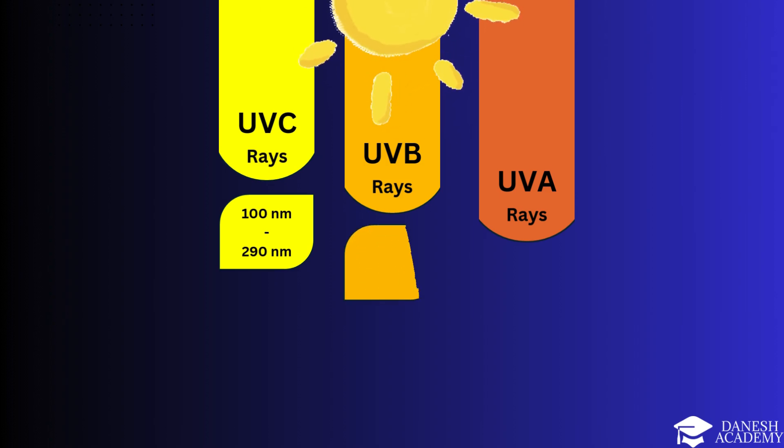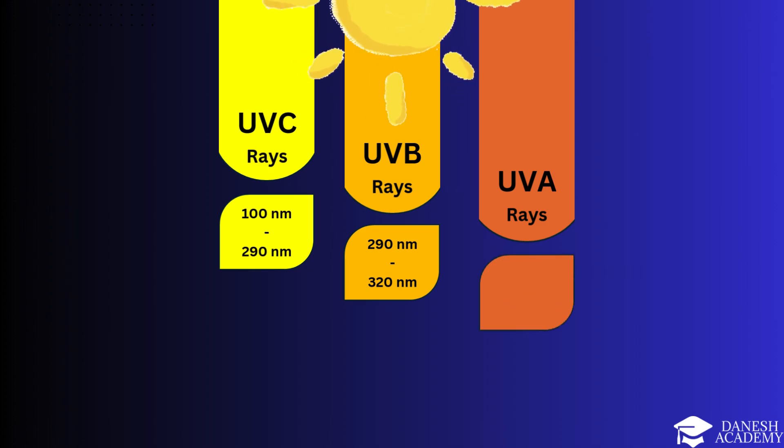UVB rays, 290 nanometers to 320 nanometers, medium wavelength UV rays. Partially absorbed by the atmosphere. These rays contribute to energy transfer but are less intense than UVC. UVA rays, 320 nanometers to 400 nanometers, the longest UV rays. They penetrate Earth's atmosphere and are the most significant in reaching solar panels. Each type of UV ray carries energy, but it's primarily UVA and visible light that solar cells utilize effectively to generate electricity.